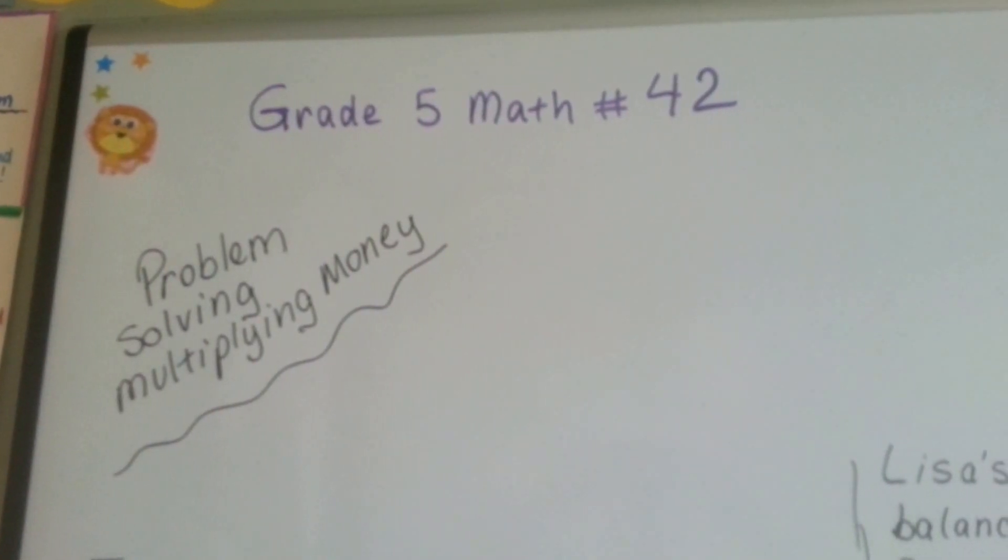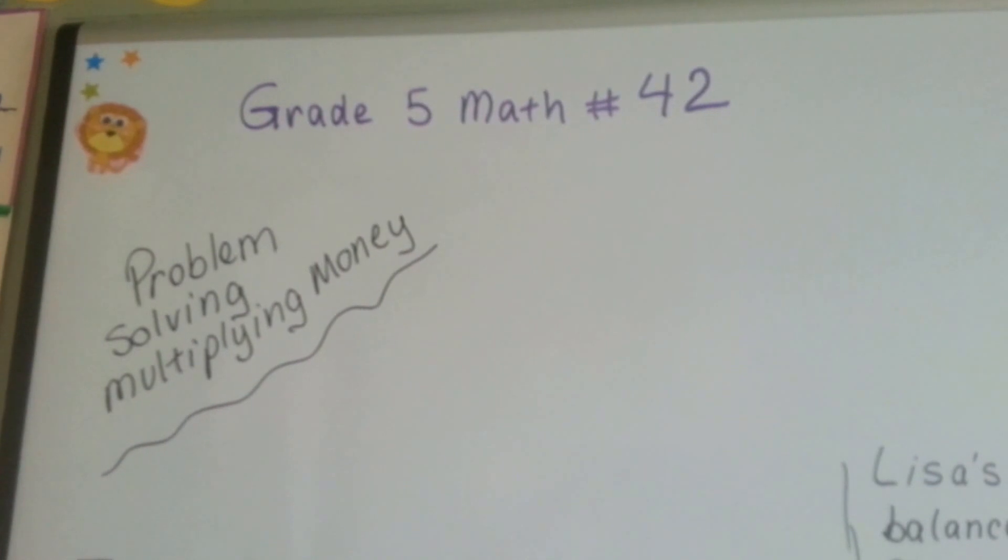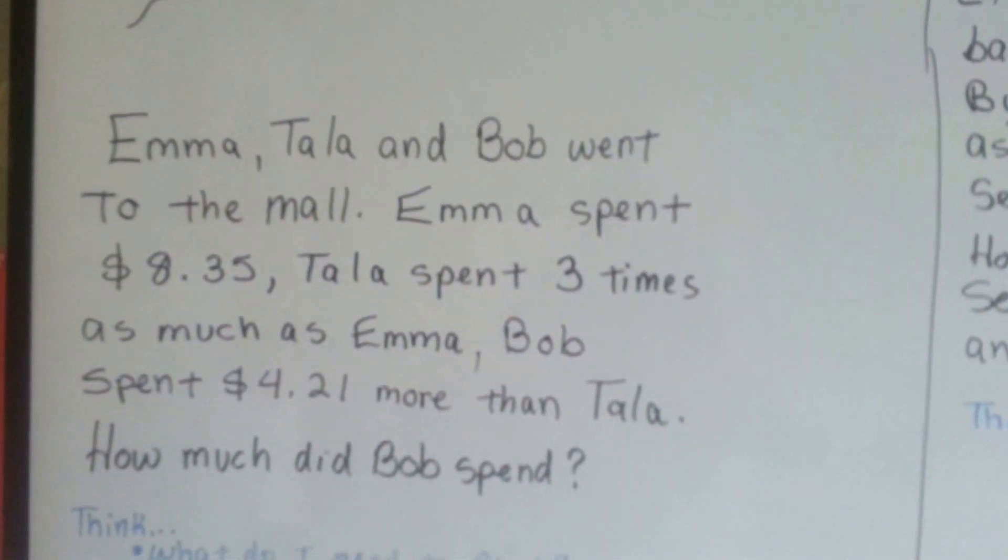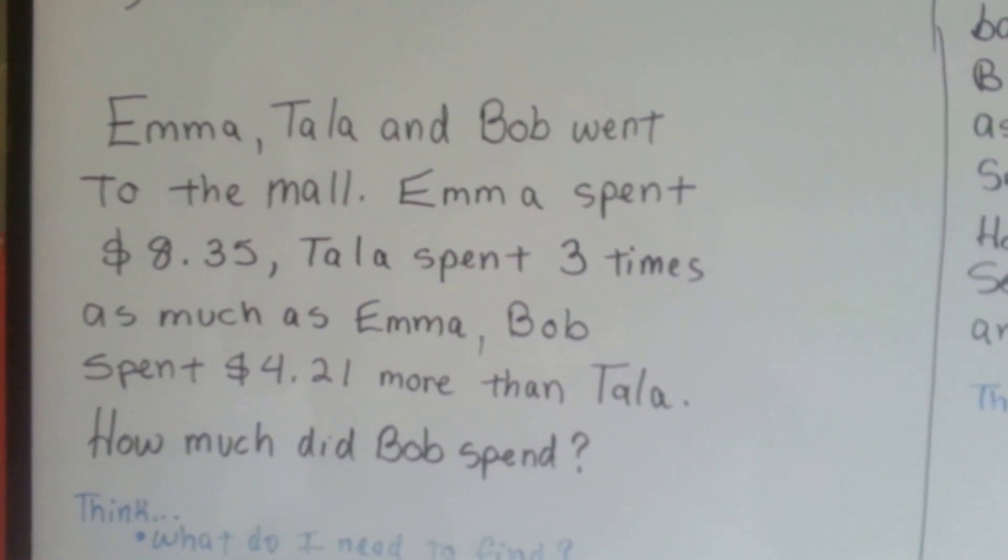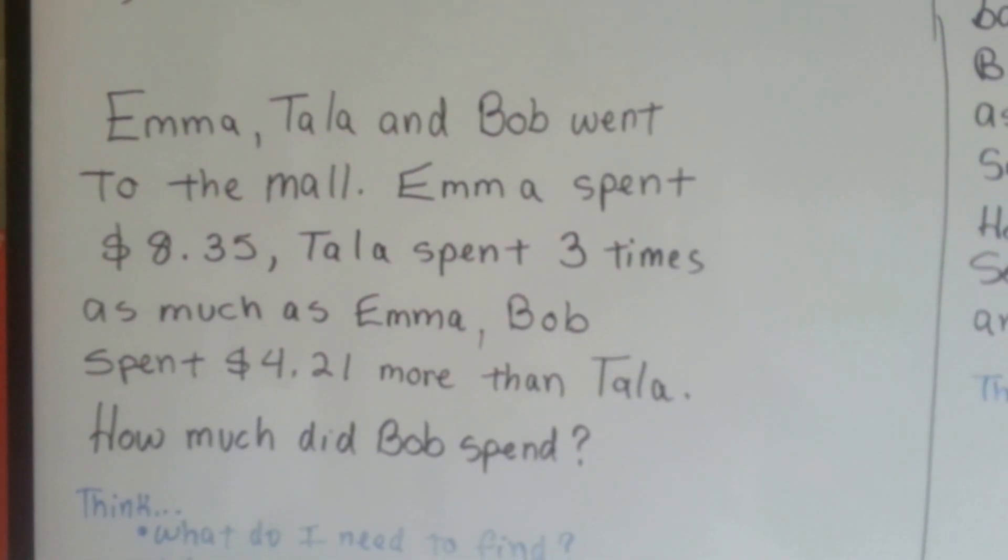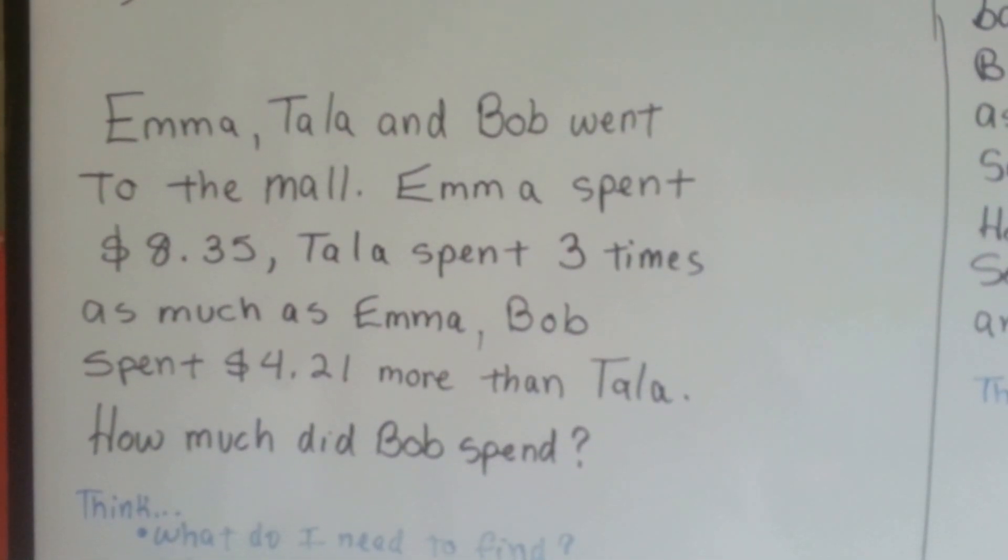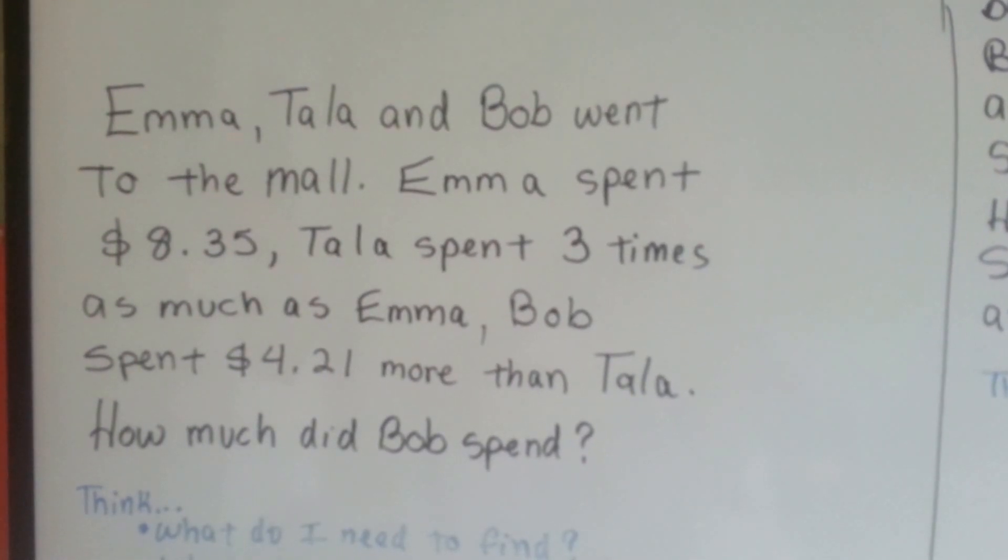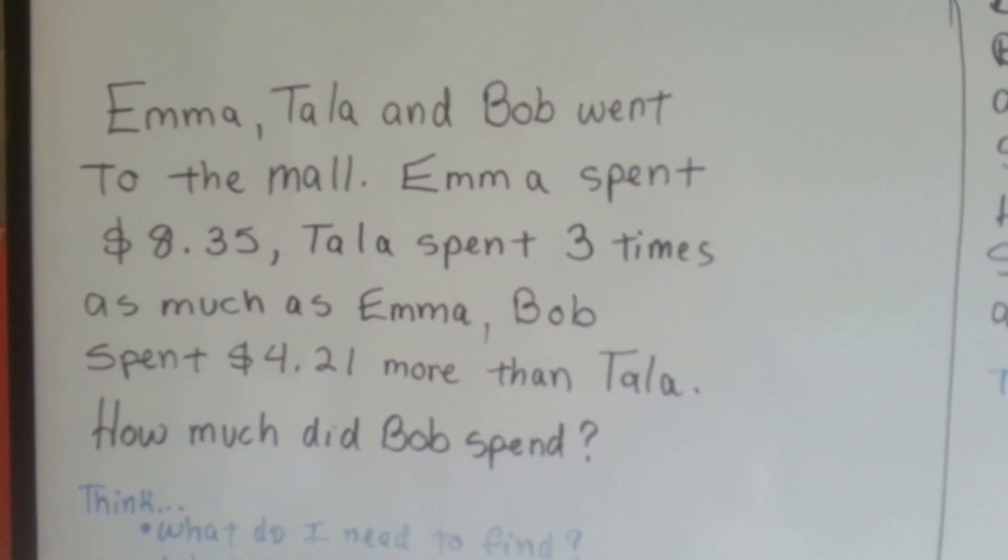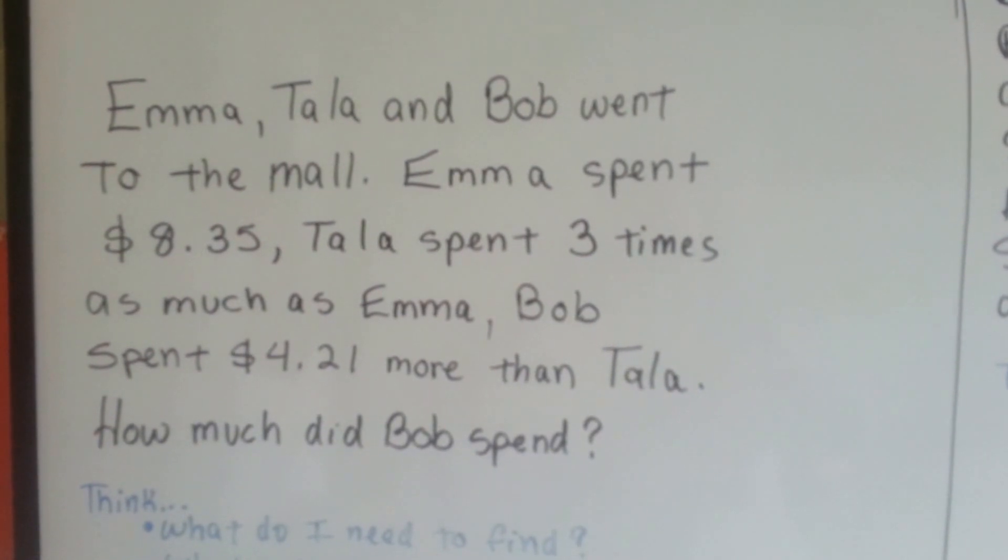Grade 5 math number 42, Problem Solving Multiplying Money. Emma, Tala, and Bob went to the mall. Emma spent $8.35. Tala spent three times as much as Emma. And Bob spent $4.21 more than Tala. How much did Bob spend?